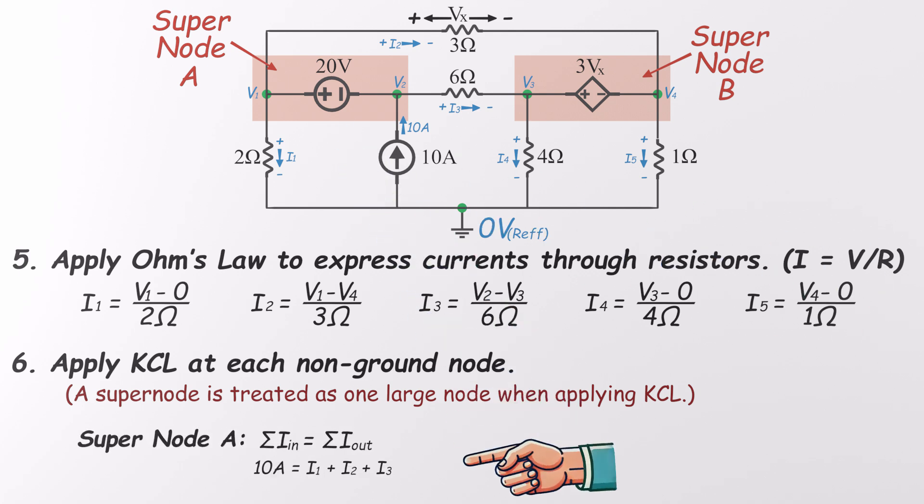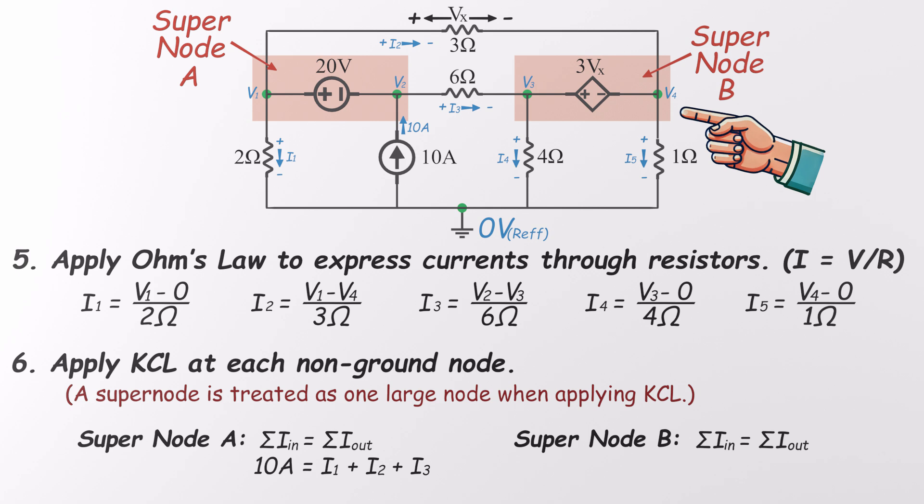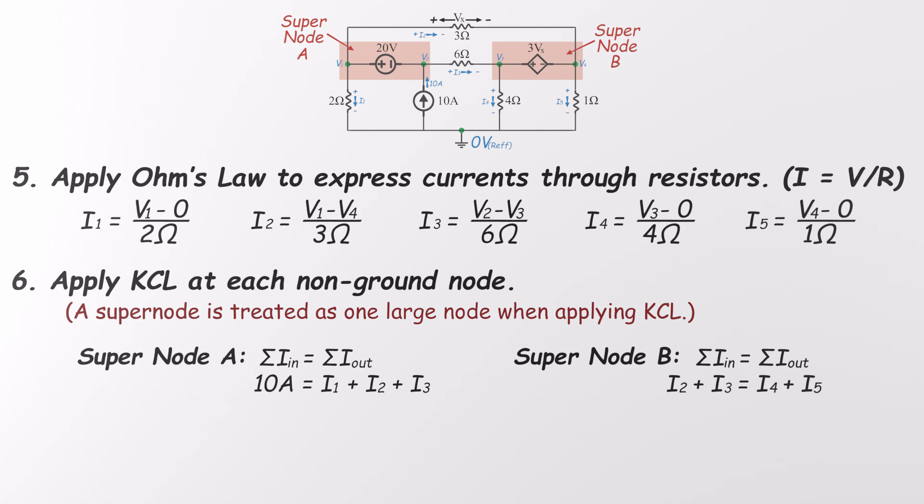Starting with supernode A, we've got 10 amps entering and three currents leaving, I1, I2, and I3. Now let's plug in the current expressions we got from Ohm's law. For supernode A, we said 10 amps are entering, while I1, I2, and I3 are leaving. Using our earlier expressions, I1 is V1 divided by 2, I2 is V1 minus V4 divided by 3, I3 is V2 minus V3 divided by 6. Let's clear the denominators by multiplying through with a common denominator, 6. Doing the math, we get 5V1 plus V2 minus V3 minus 2V4 equals 60. That's our first equation.